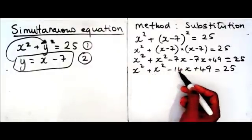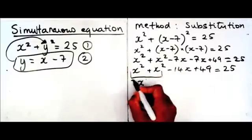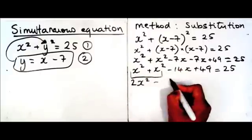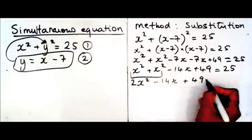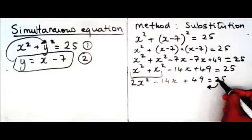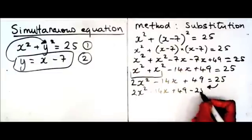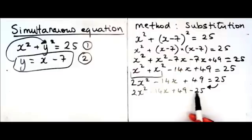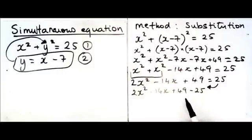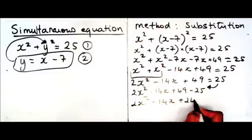Now I've got x squared plus x squared minus 14x plus 49 equals 25. I'm going to collect the like terms: 1x squared plus 1x squared gives 2x squared, so 2x squared minus 14x plus 49 equals 25. The next step is to bring the 25 to this side — because it's plus 25, it becomes minus 25 — giving 2x squared minus 14x plus 49 minus 25. Doing 49 minus 25: from 25 to 30 is 5, from 30 to 49 is 19, so 19 plus 5 gives 24. Therefore, 2x squared minus 14x plus 24 equals 0.